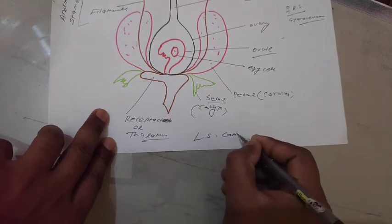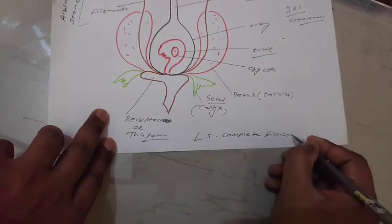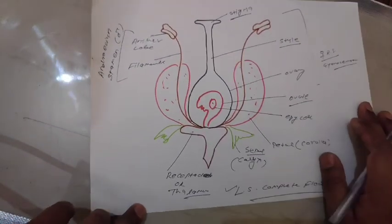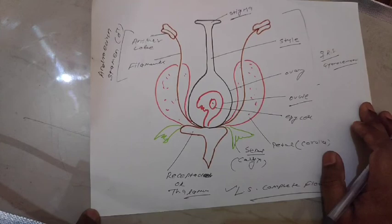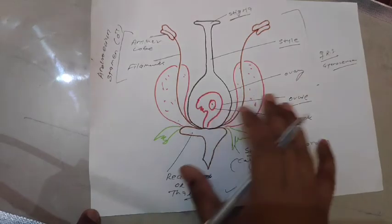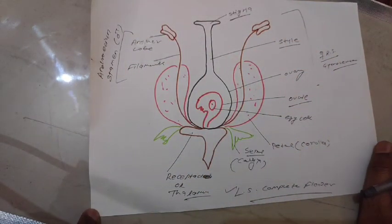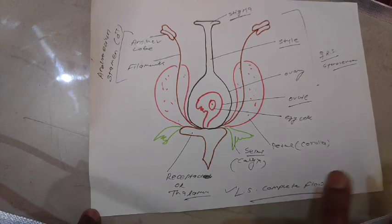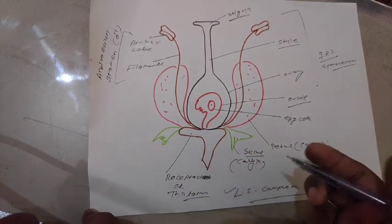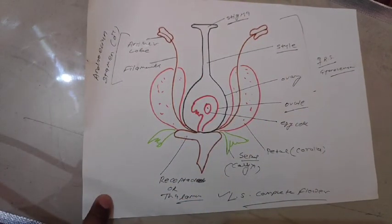This is the complete diagram — the LS of an angiospermic flower. It is a very important diagram. You should label it, learn it, and also practice it. You should take a screenshot for practice and also make notes. This is helpful for you and for your examination preparation. You should label it as the LS of a complete flower, write it and draw it. Thank you.